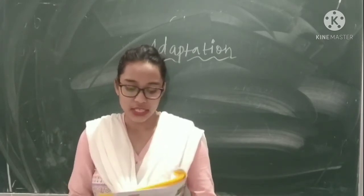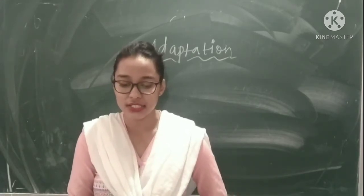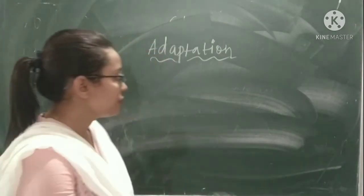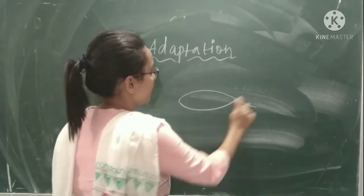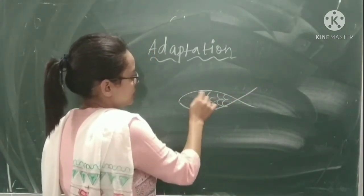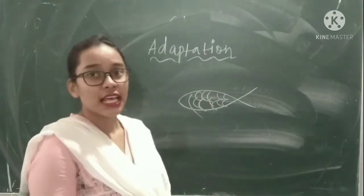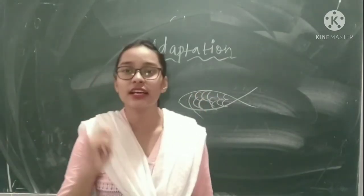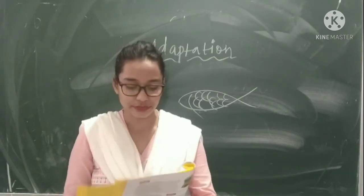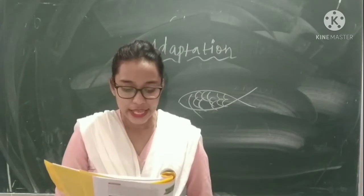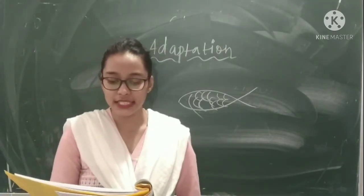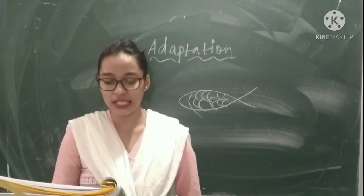Scales: the bodies of reptiles such as crocodile, lizard, and snake are covered with scales. Some fishes also have scales over their body. The process of shedding of old skin to replace it with new skin is called moulting. The body of fish is also covered with scales.